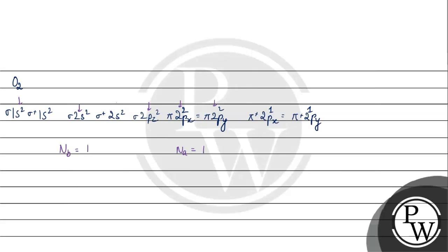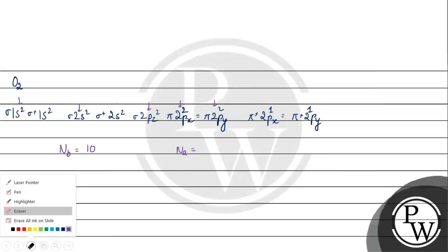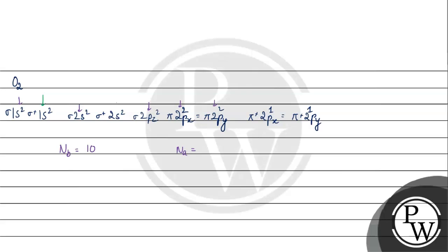Number of bonding electrons are 10. Now if we look at the number of antibonding electrons: 2, 4, 5, 6. Number of antibonding electrons is 6. So bond order is 10 minus 6 by 2, that is 4 by 2, which equals 2. Bond order of O2 is 2.